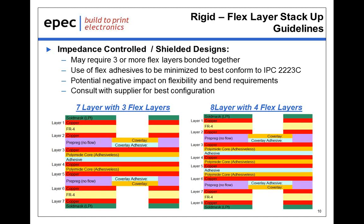Not all designs will allow the paired structure — specifically we encounter this on impedance-controlled designs or designs that require shielding in the flex area, where it requires three or more flex layers to be bonded together. In these designs, it's very important to use a layer structure that minimizes the amount of adhesives used to bond the flex layers together, which in turn allows the design to best conform to IPC standards. Bonding four or five layers together does have a potential negative impact on flexibility and bend requirements, and that should be investigated as early on as possible in the design process.